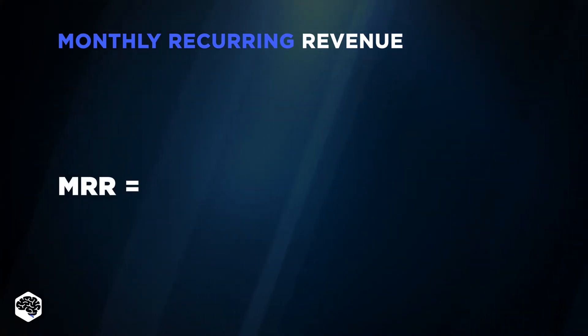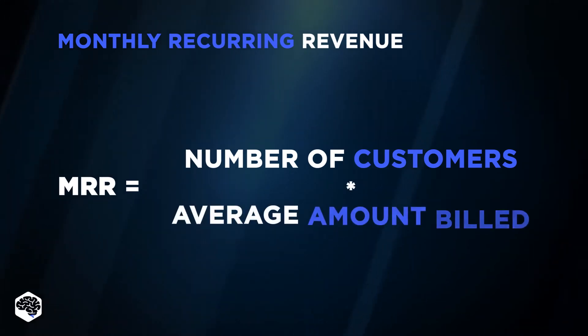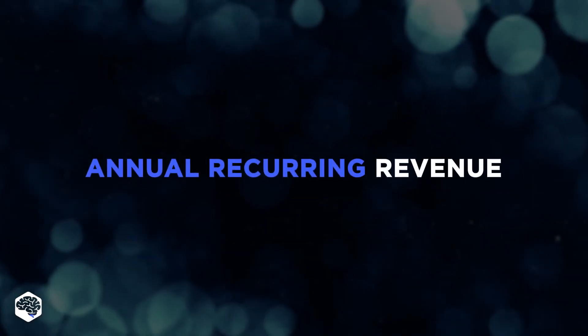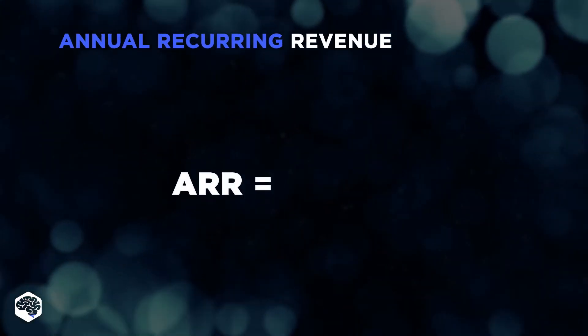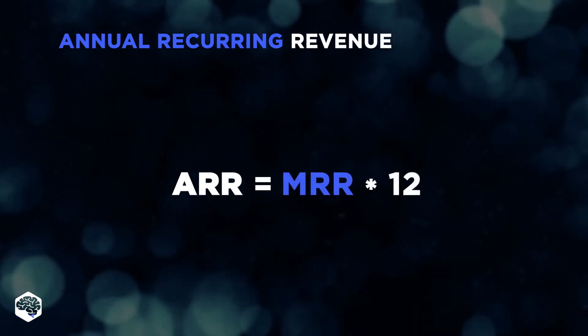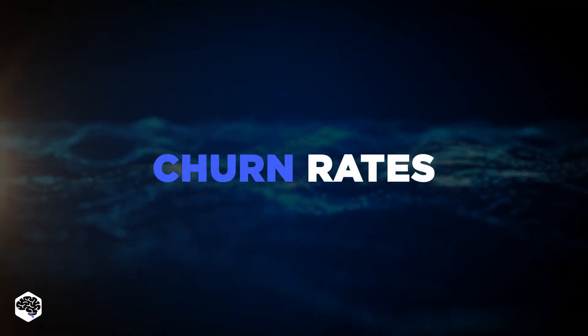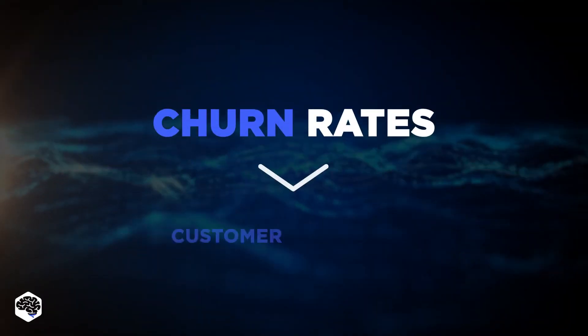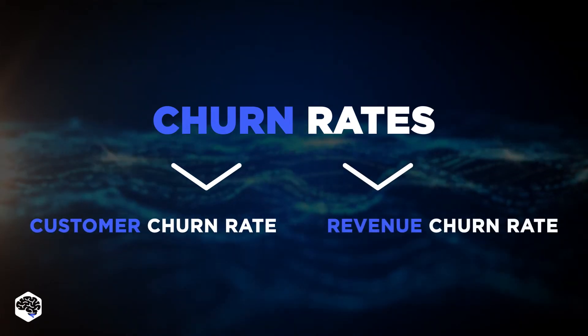To get it, you need to multiply the number of customers by the average amount billed. Annual Recurring Revenue is calculated by multiplying Monthly Recurring Revenue by 12. Talking about churn rates, we define Customer Churn Rate and Revenue Churn Rate.